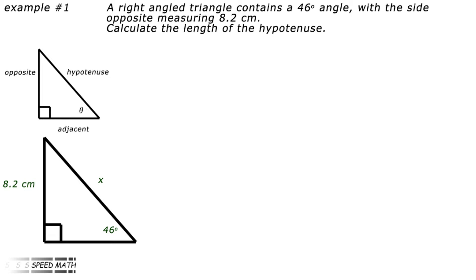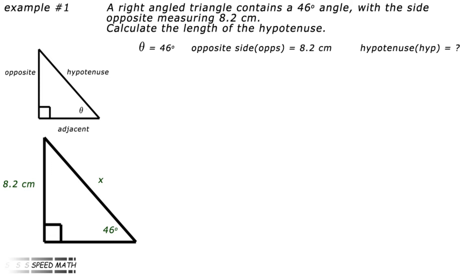Example number 1: A right angle triangle contains a 46 degree angle with the side opposite measuring 8.2 cm. Calculate the length of the hypotenuse. The first thing to do is to analyse the information given by writing it out in one line: theta equals 46 degrees, opposite side equals 8.2 cm, hypotenuse equals x cm to two decimal places. I found it always a good thing to visualise the problem by making diagrams, so I've made a little right angle triangle with the side names and a larger triangle with the numbers on it.